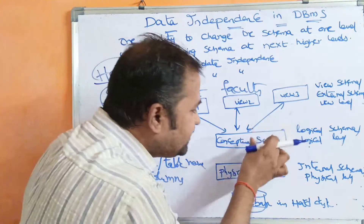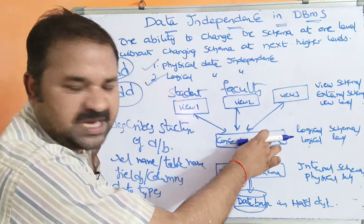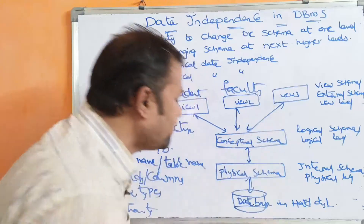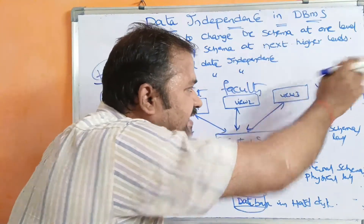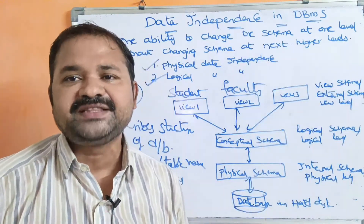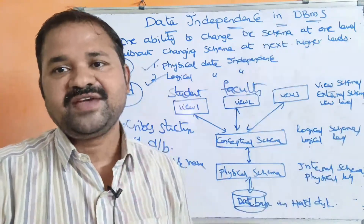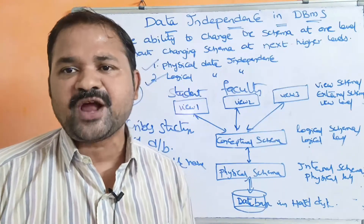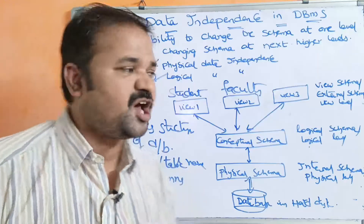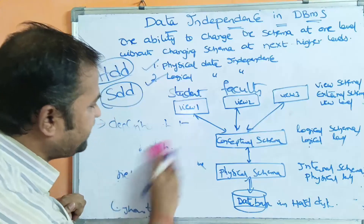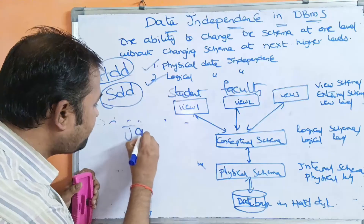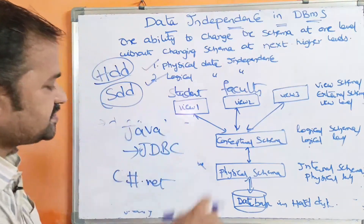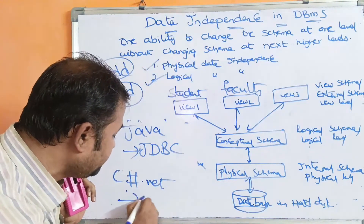The second type is logical data independence, which means we can change the logical schema or conceptual schema without changing its higher level, that is the view schema. In the view schema, we write application programs to display views to users. These programs are developed using languages like C, C++, Java, or C Sharp — mainly Java with JDBC and C Sharp with ADO.NET.